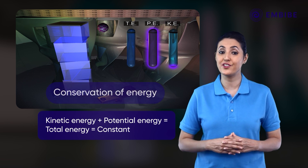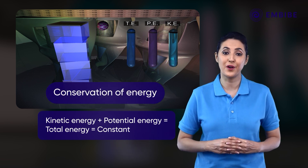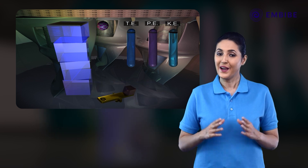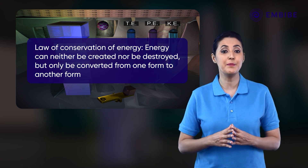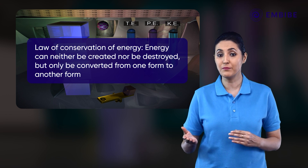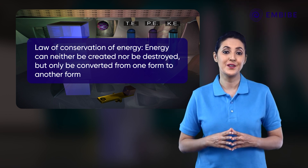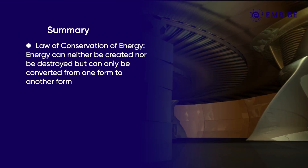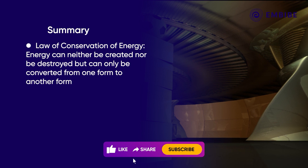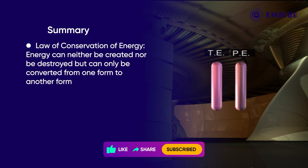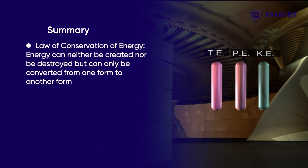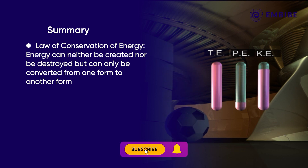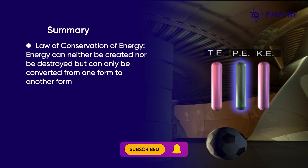This is energy conservation — the law of conservation of energy. According to this law, energy can only be converted from one form to another; it can neither be created nor be destroyed. In summary, if a body falls, its kinetic energy increases as its potential energy decreases, and the total mechanical energy remains constant.